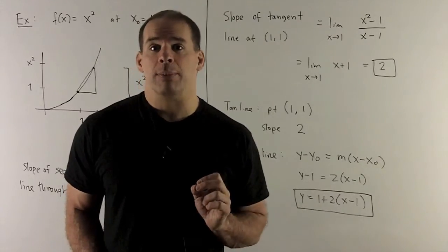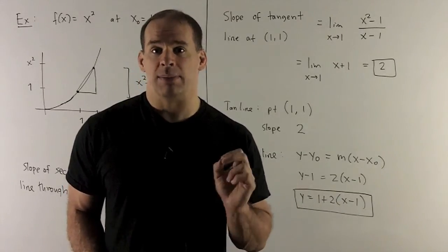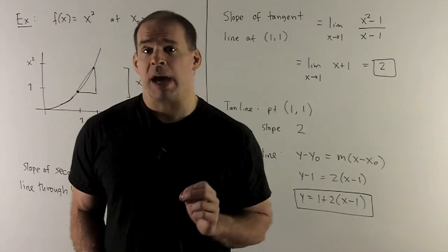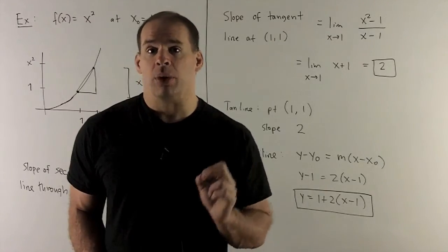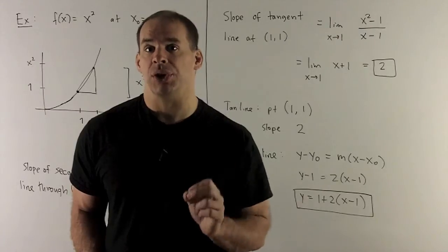If I factor out the top, that'll turn to x plus 1 times x minus 1. The x minus 1's cancel out. And now I can put our 1 in. And then we see that the slope is going to be equal to 2.